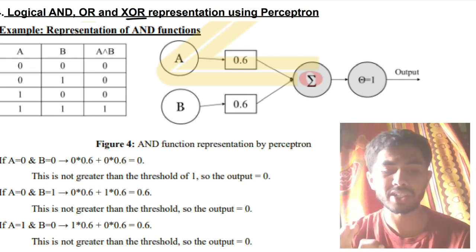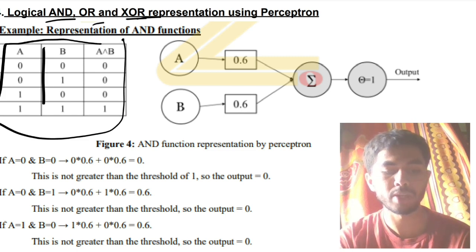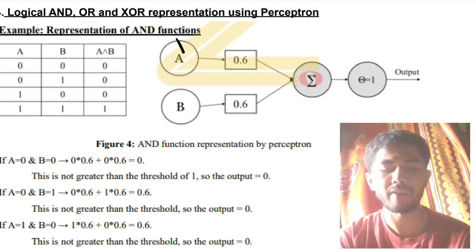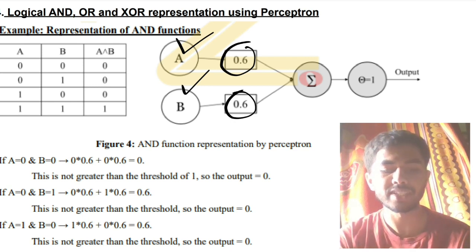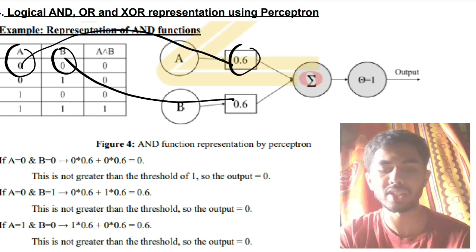Moving on to the fourth super important question: logical AND/OR representation — very expected, don't miss this. If they ask about AND, OR, or XOR: draw the truth table with three columns (0,0 / 0,1 / 1,0 / 1,1) and write down the answers. Then make the perceptron graph with inputs A and B, assign some weights. For example, with weight 0.6: 0×0.6 + 0×0.6 = 0, which is less than the threshold of 1, so the answer is 0.